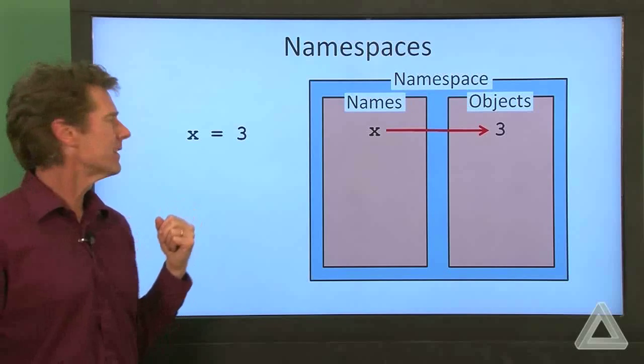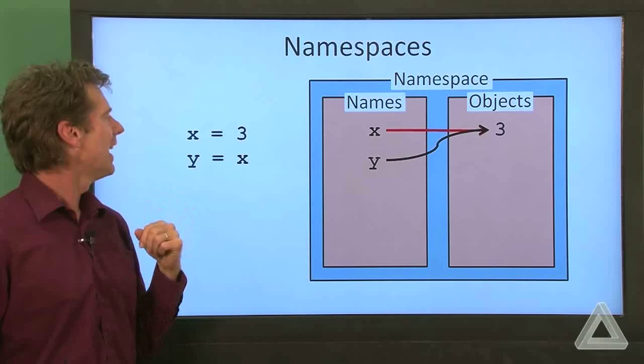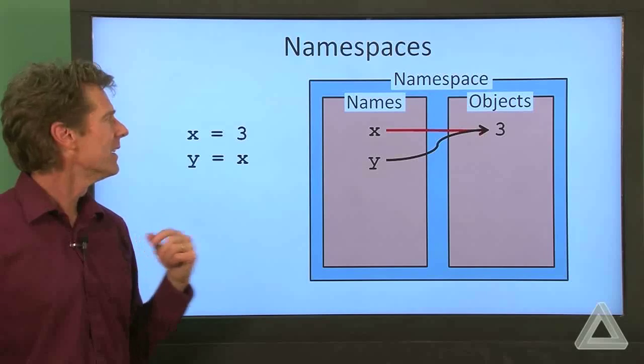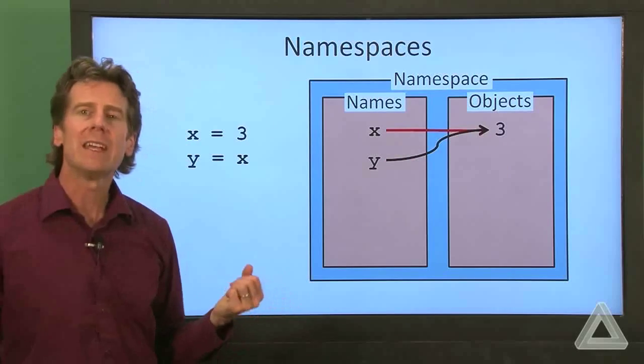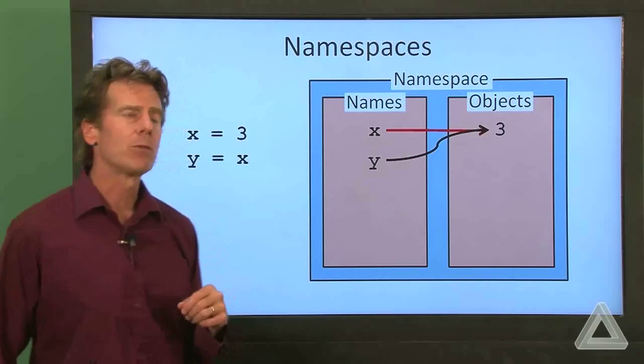Let's add another statement of Python here. Let's say y is equal to x. Well, that will say, okay, y, you kind of point to the same memory where you'll find the value 3.